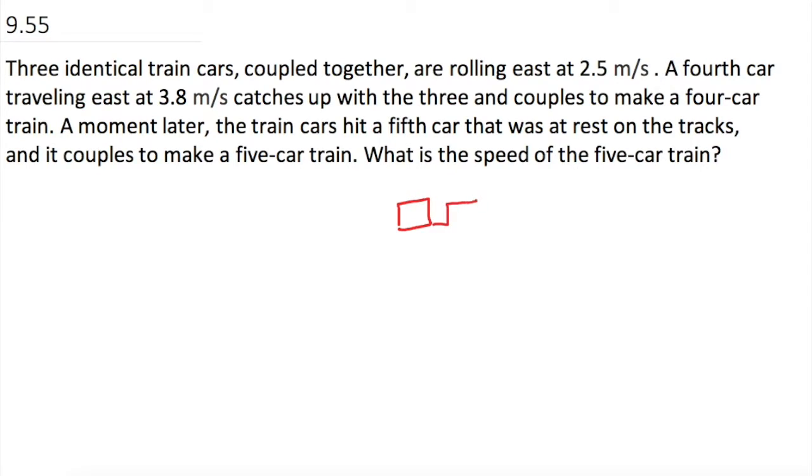So we have one, two, three cars rolling along a track at 2.5 meters per second. And they tell us the masses are identical, but they don't tell us what it is. So let's just say it's M, M, and M. And then they say a fourth car, assumed to also be M, comes along and catches up with them going 3.8 meters per second. And they link to form a four-car chain, two, three, and four.